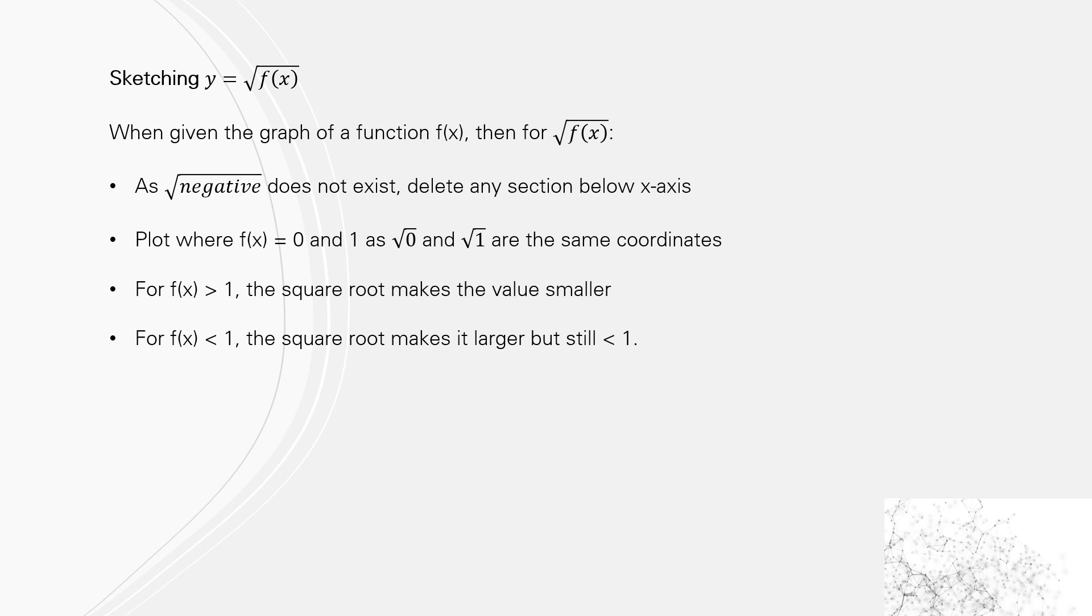So let's start with y equals the square root of the function. When given the graph of the function, as the square root of negatives do not exist, any section that's below the x-axis we can delete. Plot where the function equals 0 and 1, because when you take the square root of 0 and 1, you get the same coordinates. So they're the easy ones.